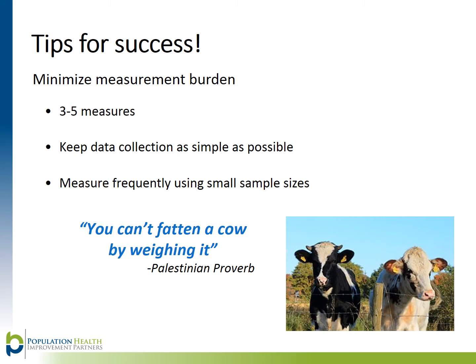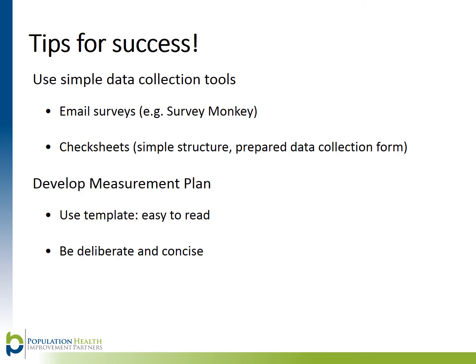In order to minimize your measurement burden, make sure to keep things simple. Limit your project measures to about three to five measures, and measure frequently in small batches. Simply doing a lot of measurement will not change things — you have to have the time and capacity to make changes in your process. Make sure you use data collection tools that are simple and easy to understand and keep track of. Email surveys and check sheets are a good example of simple tools.